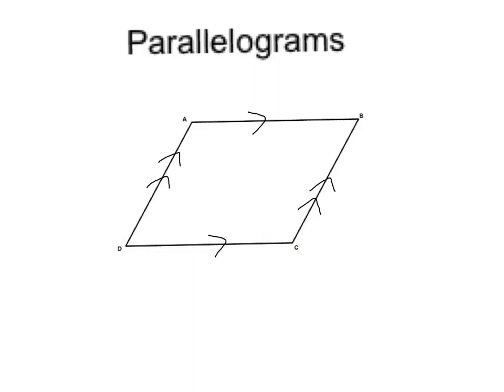We use these arrows, or arrow-type looking things, to show where we have our parallel sides. So what we notice is that AB is parallel and congruent to DC. Congruent means they have the same side length, or equal side lengths. So AB is congruent and parallel to DC. AD is congruent and parallel to BC.